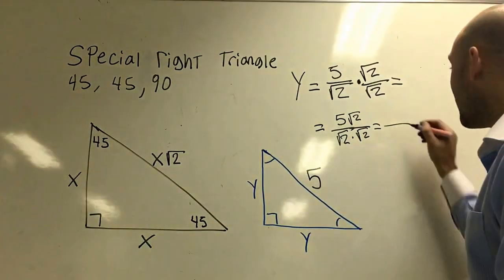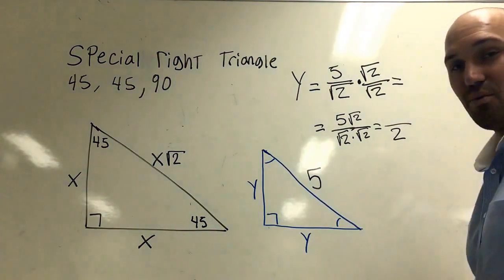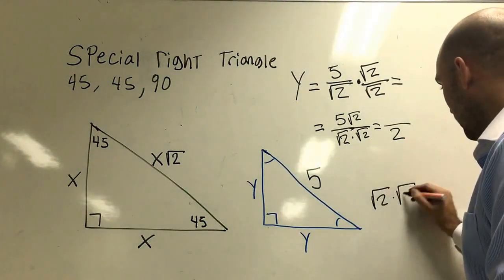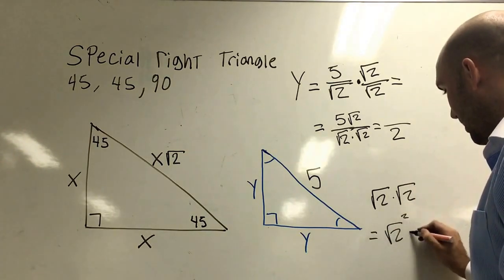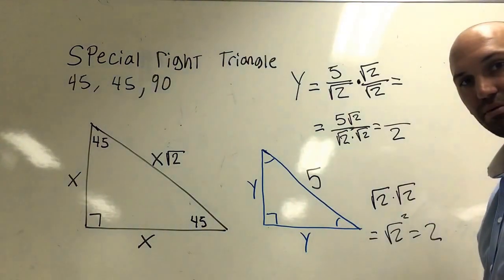Well, it's going to be 2. Okay, why is that? Because I know that square root 2 times square root 2 is the same thing as square root 2 squared, which is just 2.